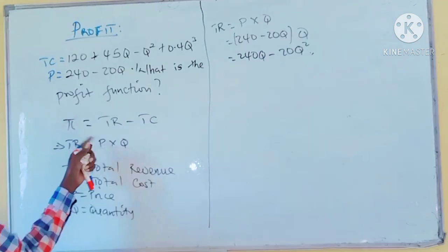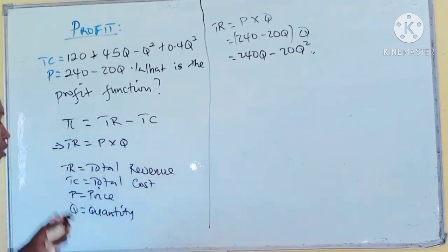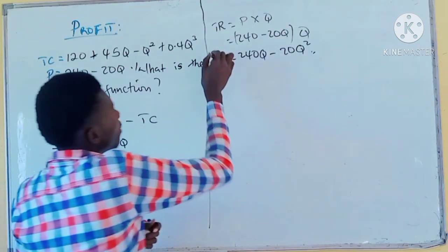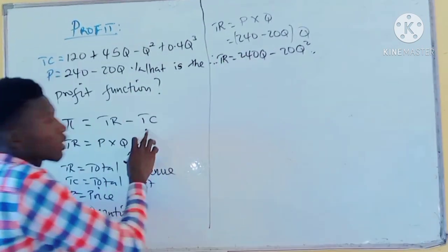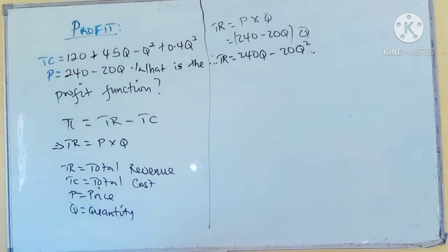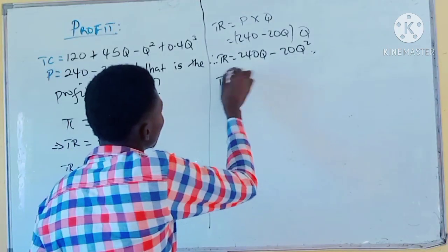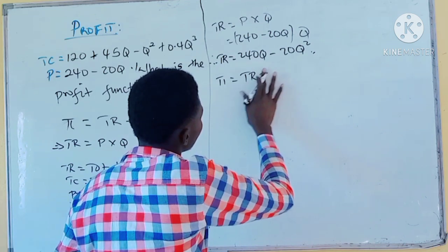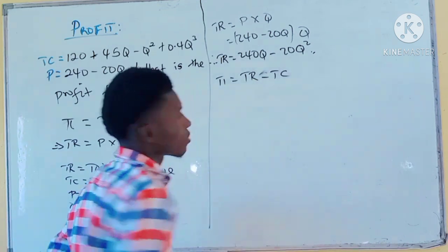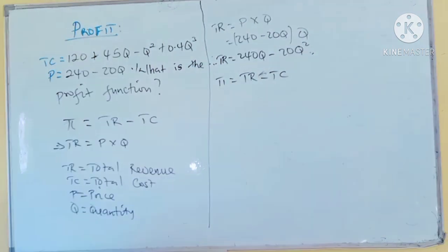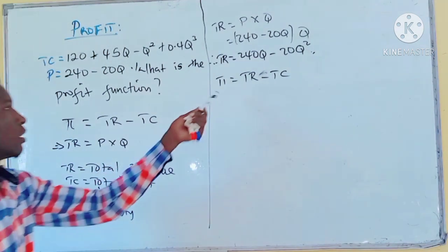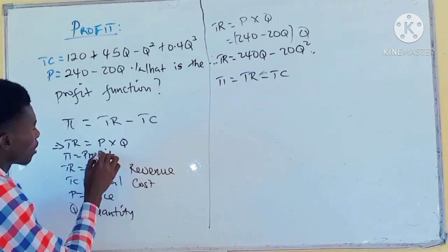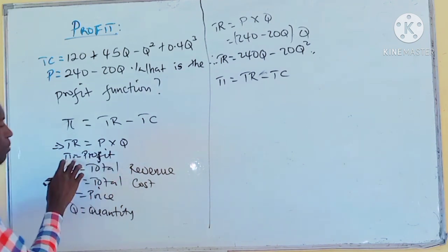From the profit equation, profit equals total revenue minus total cost. We now know total revenue. Do we know total cost? Yes, it is given. So profit equals total revenue minus total cost. This sign here represents profit. Profit equals total revenue minus total cost.